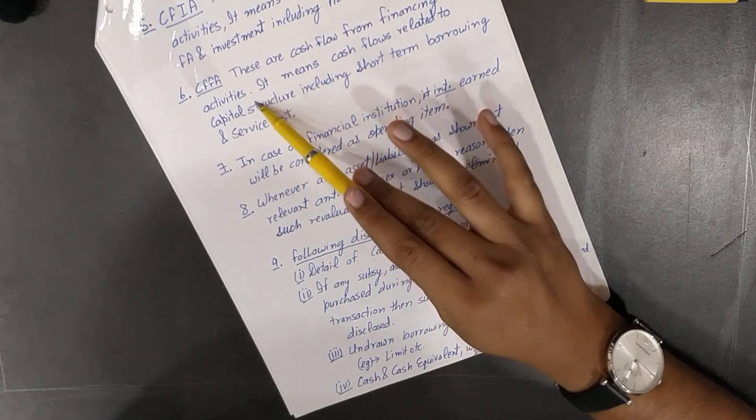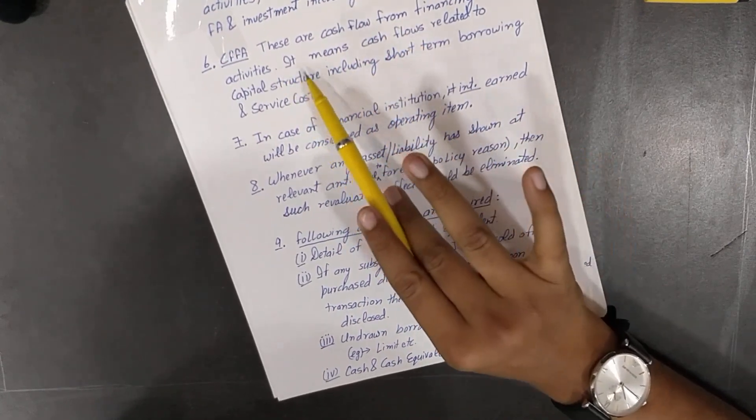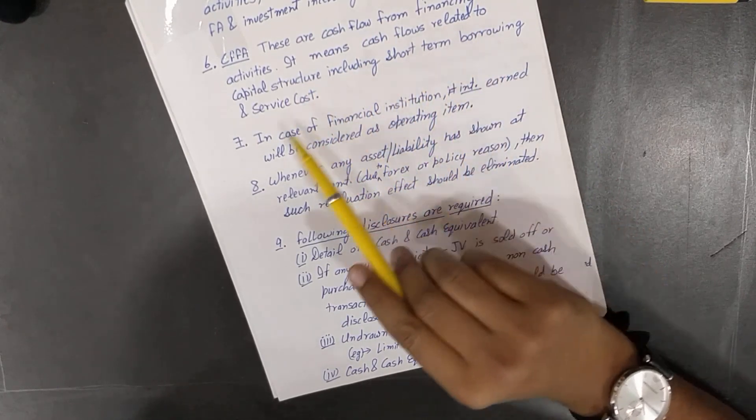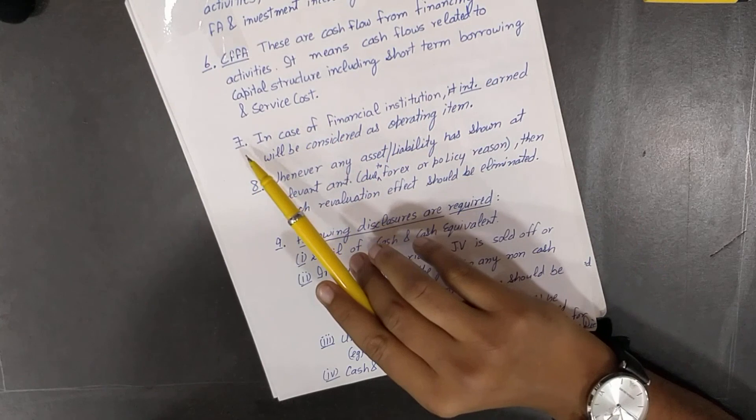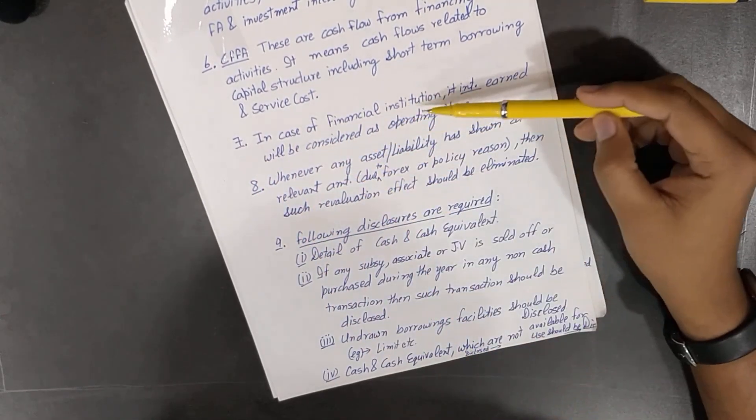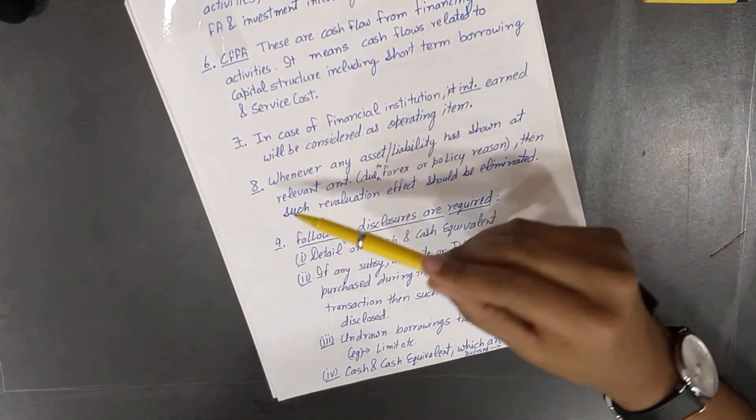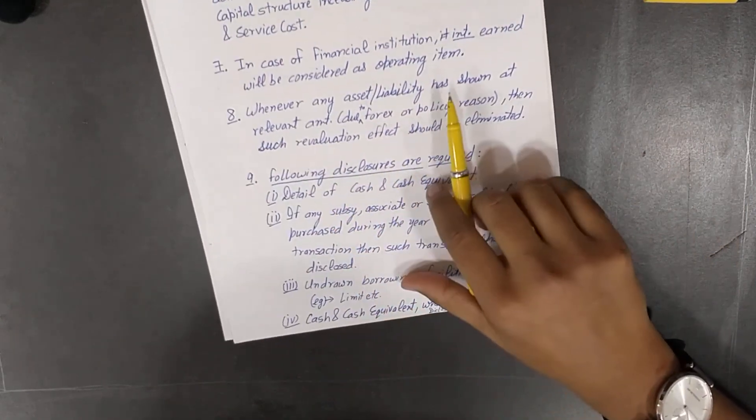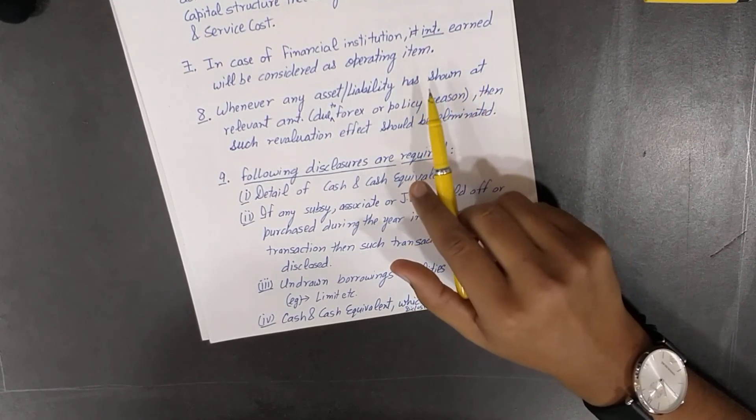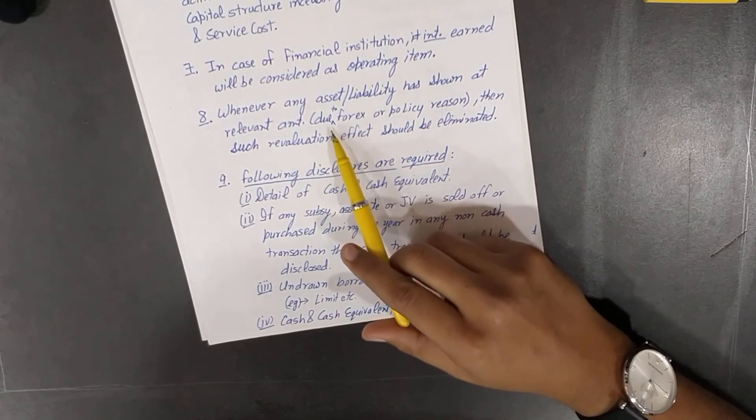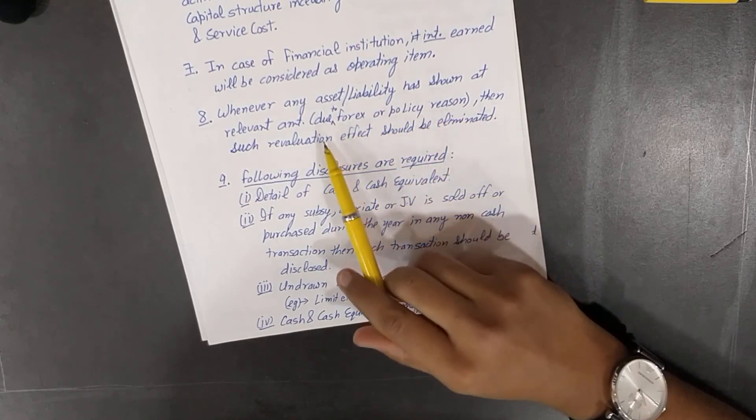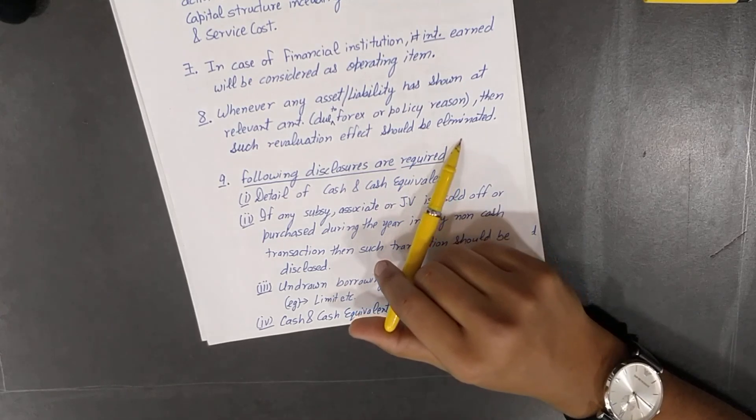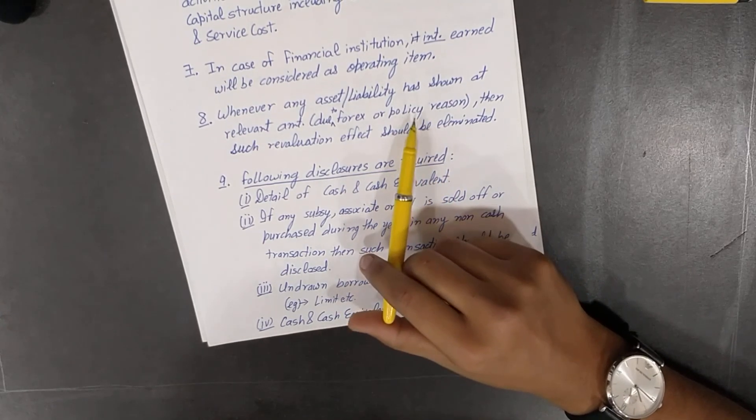These are cash flows from financing activities. It means cash flow related to capital structure, including short-term borrowings and service cost. Point number seven: in case of financing financial institution, interest earned will be considered as operating. Whenever any asset or liability has shown at revalued amount due to forex or policy reason, then such a revaluation effect should be eliminated. It is kind of tiny little important point in this complete AS.